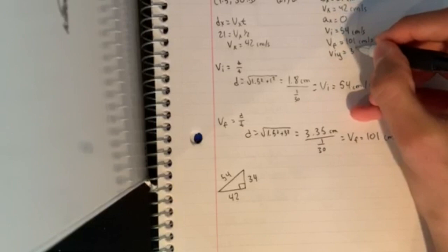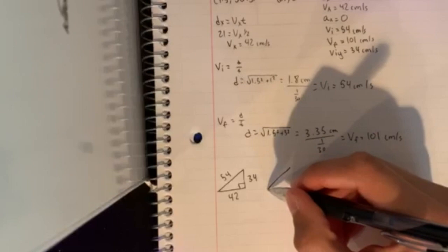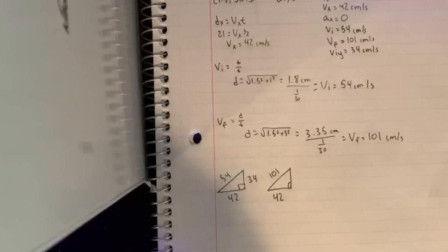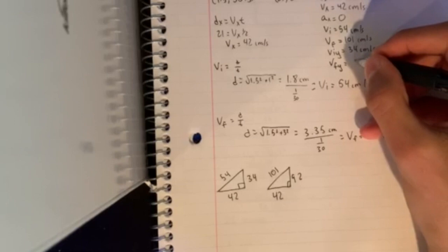And now we can solve for the final, doing the same thing. The hypotenuse would be 101. The x component would be 42. So 101 squared minus 42 squared, and the square root of that is 92. So v-final y equals 92 centimeters per second.